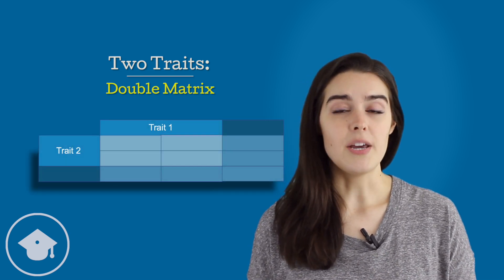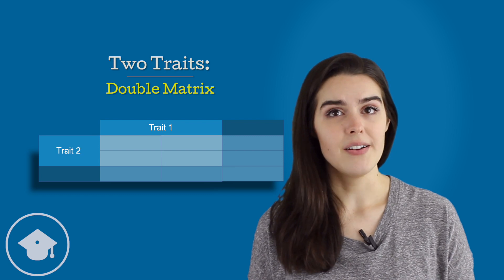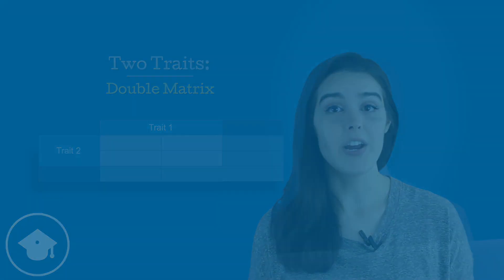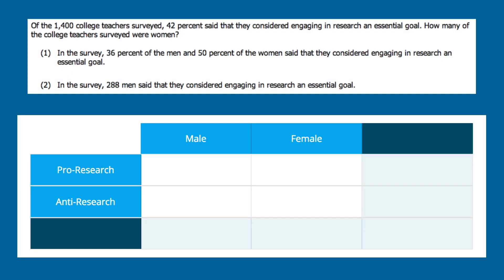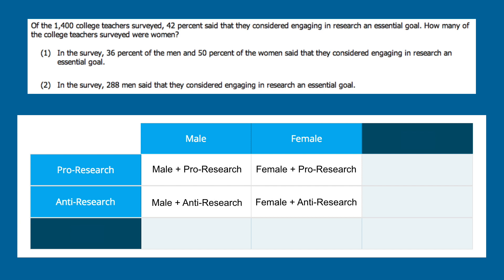In this table, the columns represent the first trait while the rows represent the second trait. For our problem about college teachers, we'll have a column for men and a column for women, and a row for pro-research and a row for anti-research. This gives us our four possible smaller groups: men who are pro-research, men who are anti-research, women who are pro-research, and women who are anti-research.